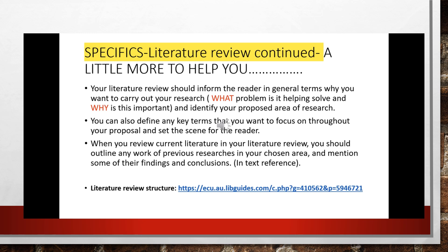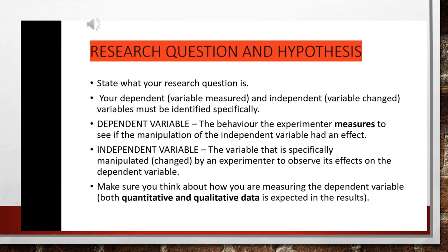Again, if you're not required to do a literature review, you don't need to do that part. The following information — your research question and your hypothesis — is a must for all research proposals. Firstly, state what your research question is. You need to have a dependent variable, which is the variable measured, and an independent variable, which is the variable that you change, and it must be identified specifically.